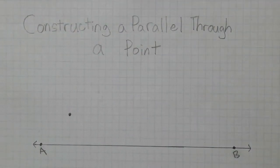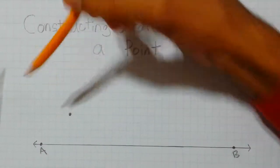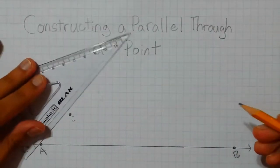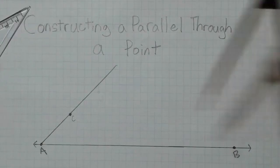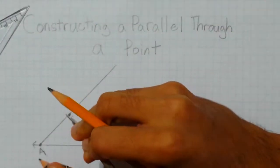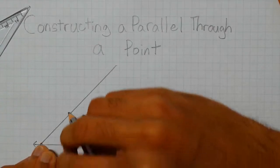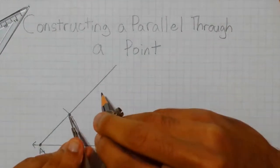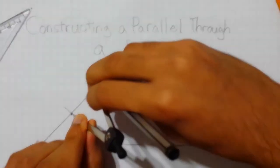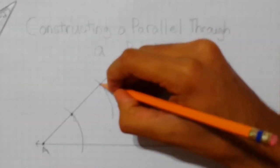Constructing a parallel through a point. So to do this, we first have line AB and a point not on the line. To construct a line parallel to AB through this point C, we will first draw a line between A and C. Then we will take the compass and measure the distance between A and C. Then placing the tip of the compass on point A, we will draw an arc through both lines. Then we will place the tip on point C and, using the same distance, draw a similar arc. Then we will label this point of intersection as point D.